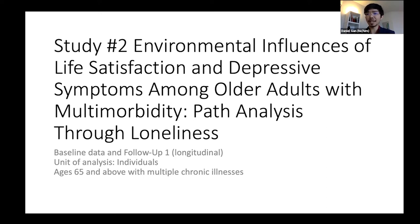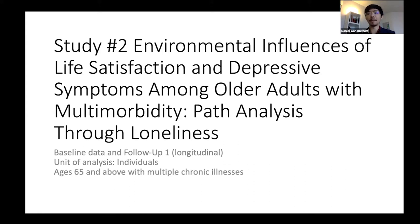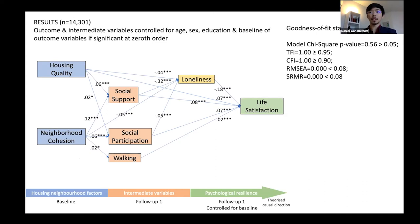The mediation analysis we do here is a little more complex than normal ones — we have four levels instead of three. We're using longitudinal baseline and follow-up one data. Our unit of analysis is individuals aged 65 and above with multiple chronic illnesses. There are a total of 27 chronic conditions that can be derived from CLSA data, ranging from diabetes to high blood pressure to cancer and things like that.